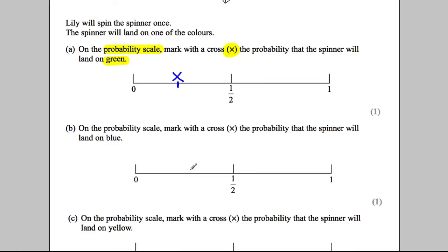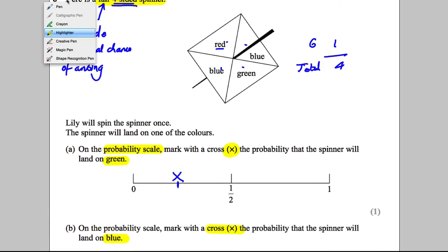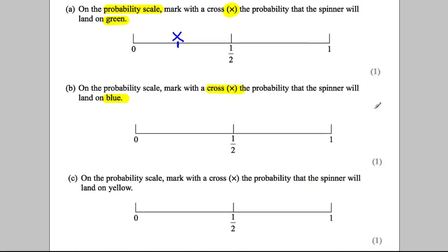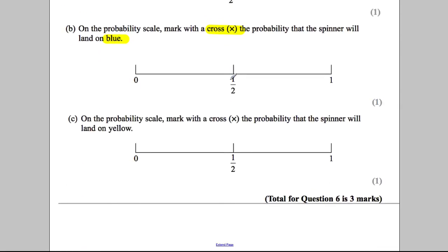Part B: on the probability scale, mark with a cross X the probability that the spinner will land on blue. So we go up here to blue. How many possible ways of getting blue? There's one way and two ways. So it's two out of a possible four. And two out of four, simplified, is simply a half. So where would I mark the X in this case? Well, I would mark it on the half, like that.